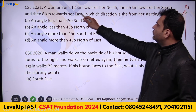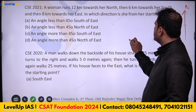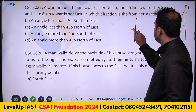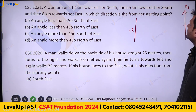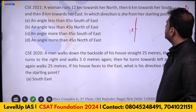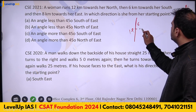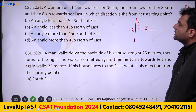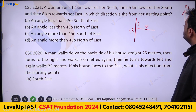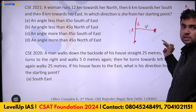A woman runs 12 kilometers north, then 6 kilometers back towards her south, then 8 kilometers towards her east. In which direction is she from the starting point? She is at the northeast — starting point is here, she is northeast of it. Simple.